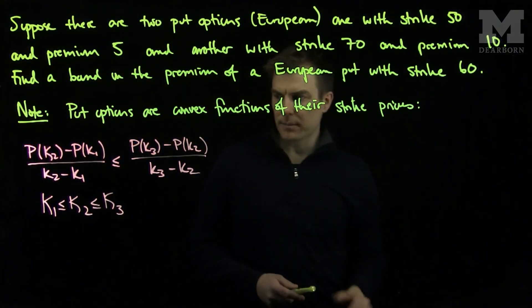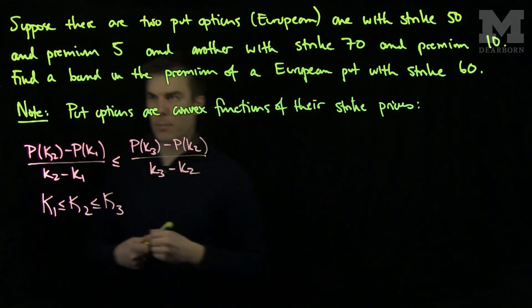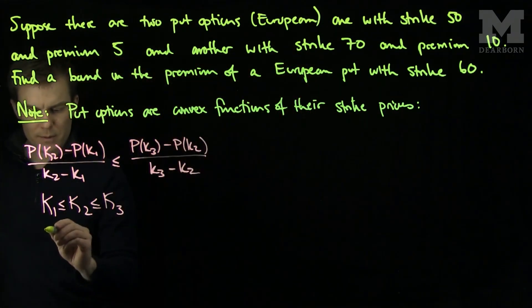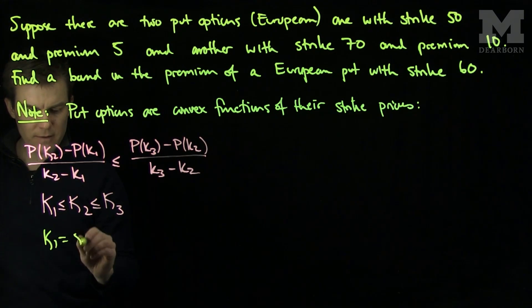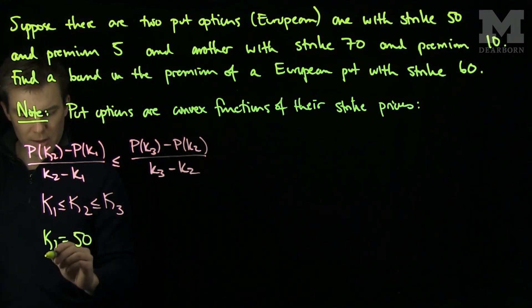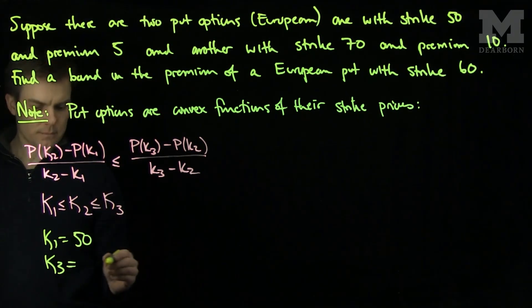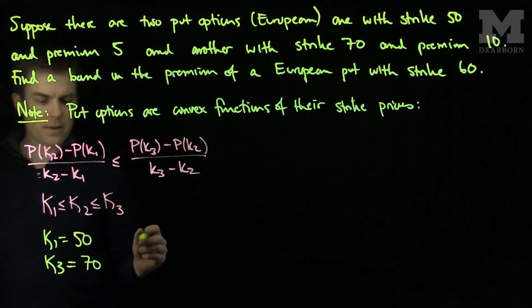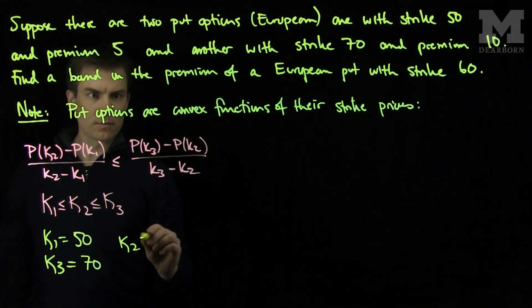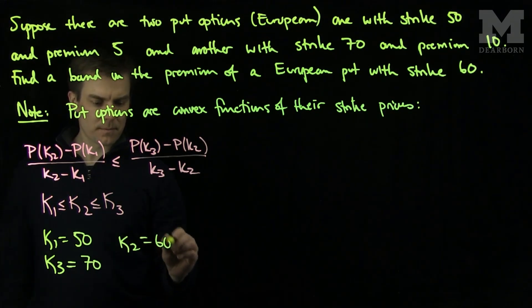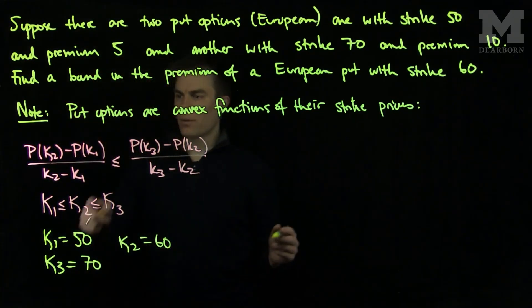So what we can do is the following. In our problem, we can choose our k1 to be fifty. Our k3 will be seventy. And the k2 will be sixty. If I plug in these formulas, we see, well,